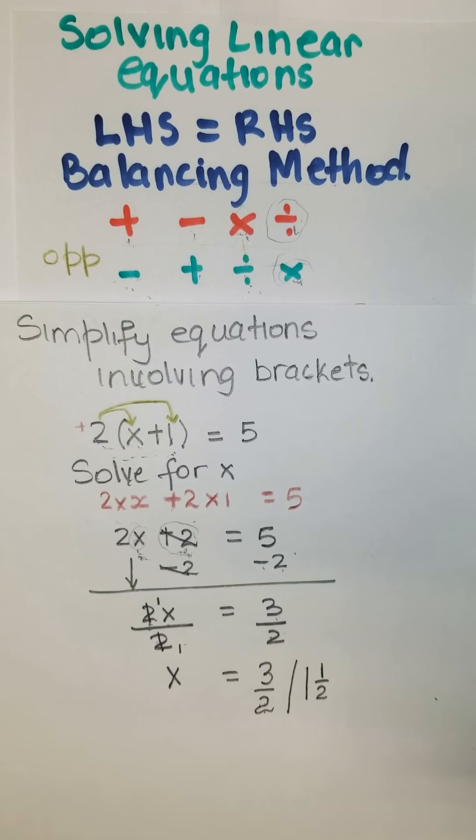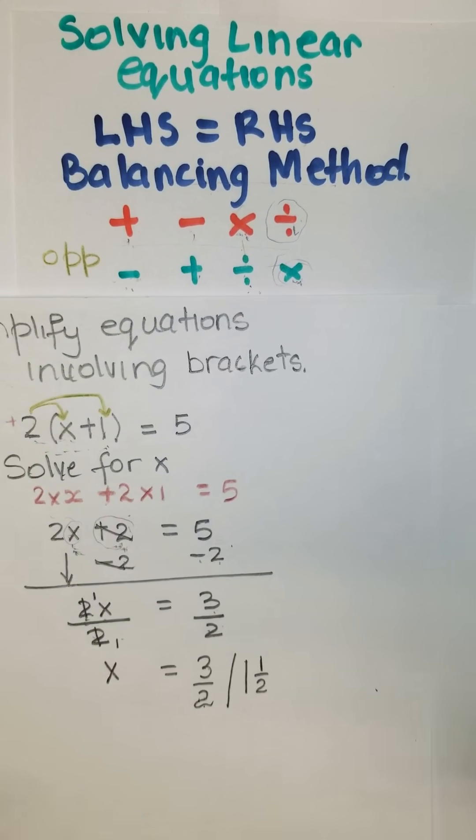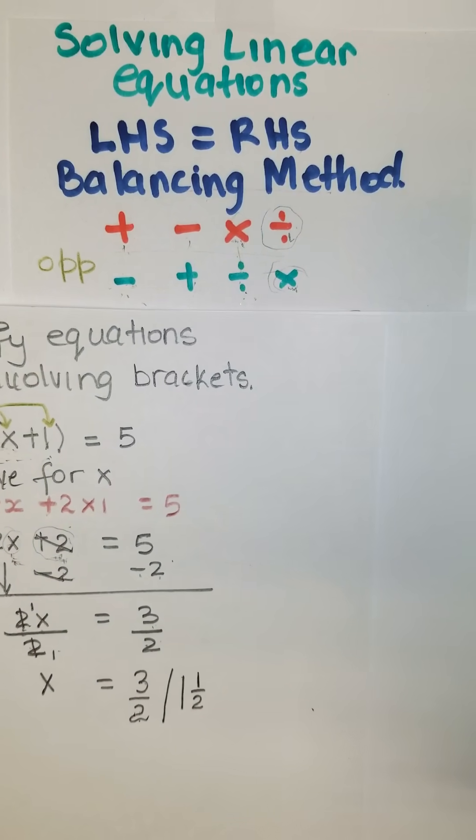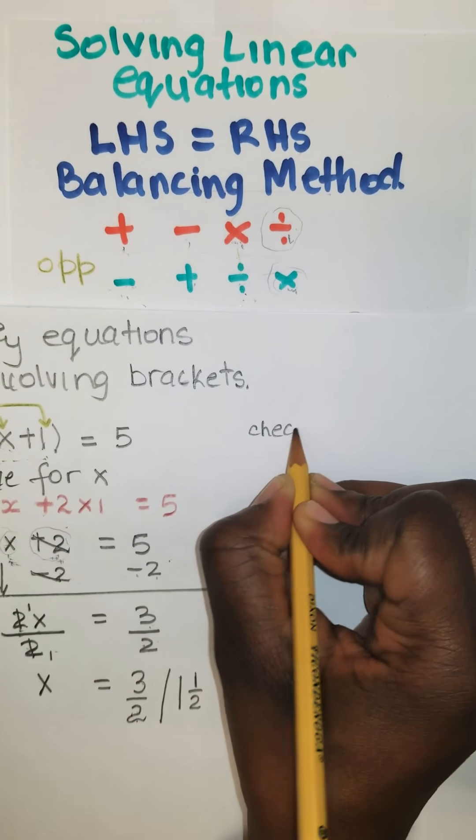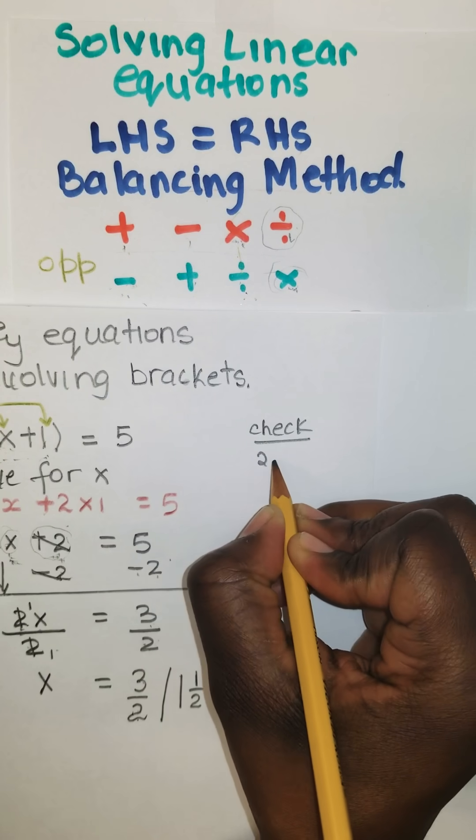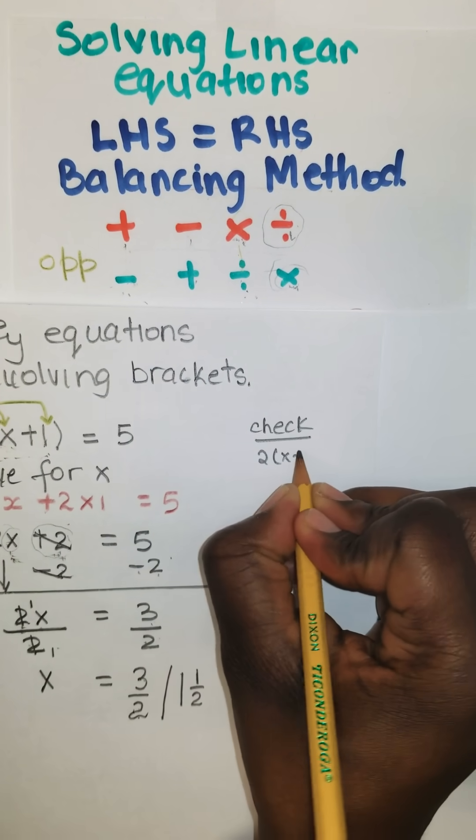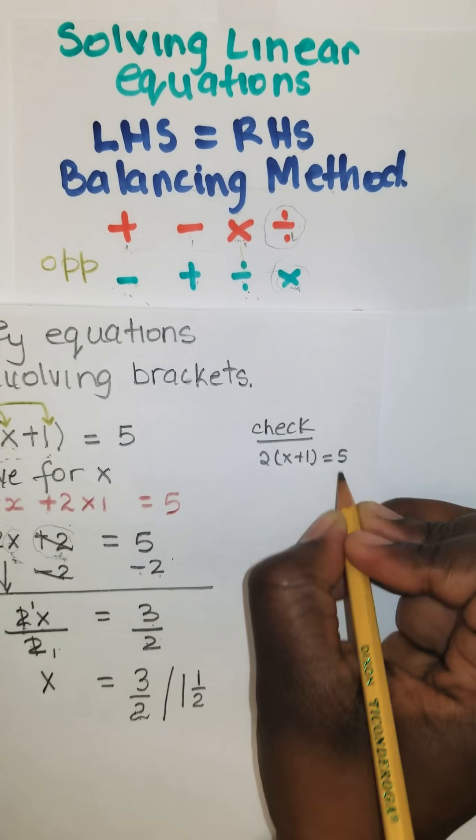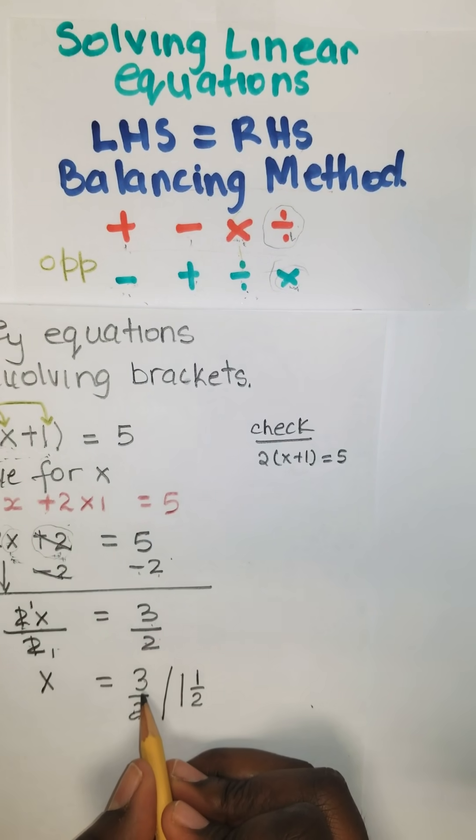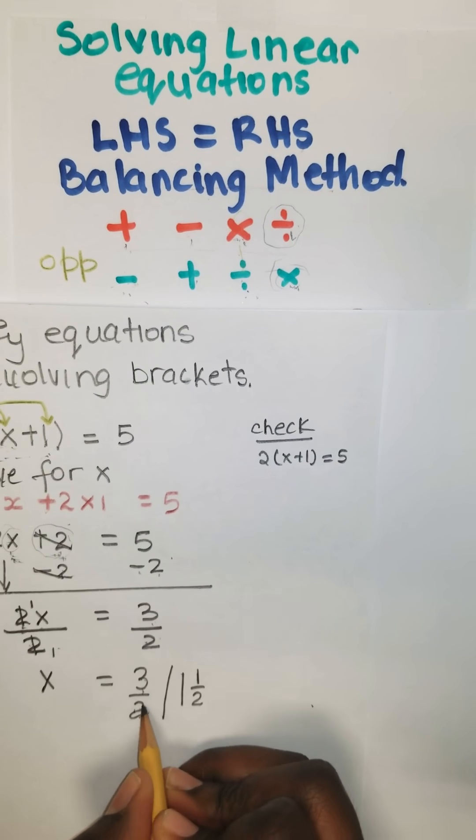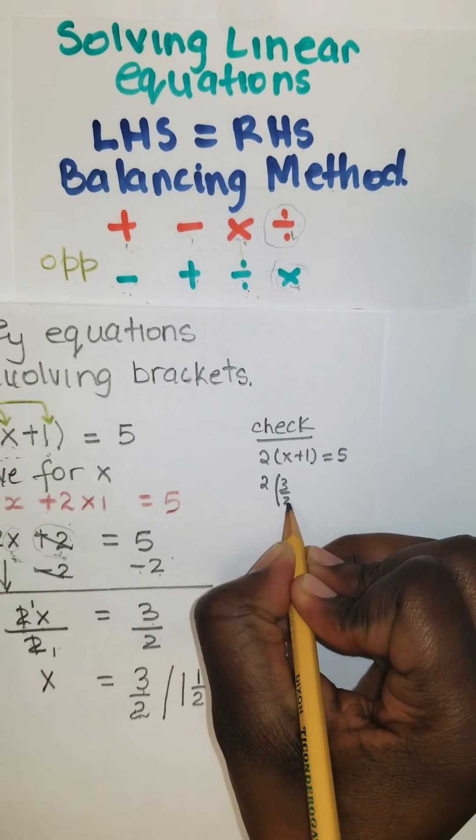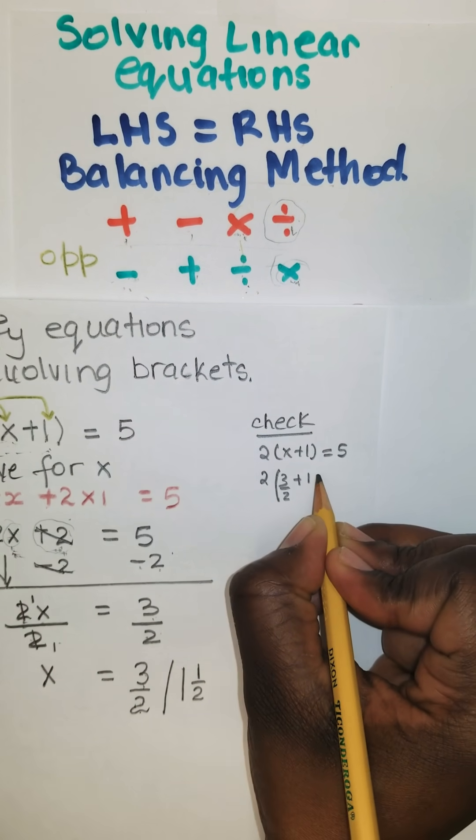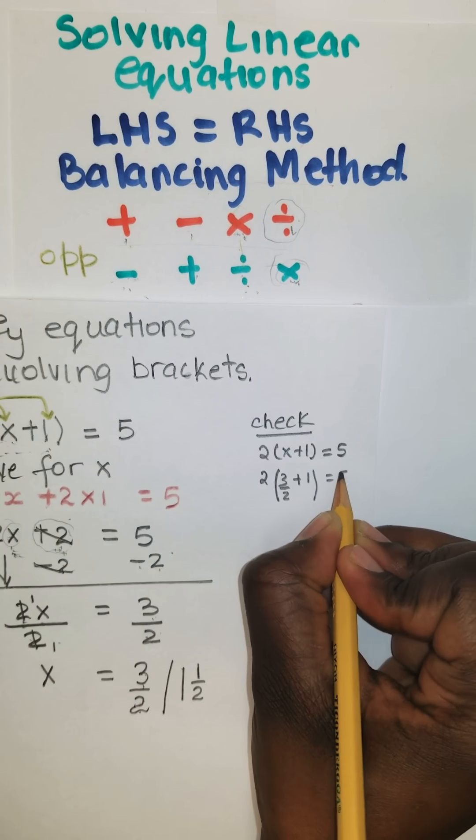Remember guys, we always check to ensure that our answer is indeed correct. So let's check. It's 2(x+1) = 5. Anywhere I see x, I'm going to put 3 over 2. So it is 2 times (3/2 + 1) = 5.